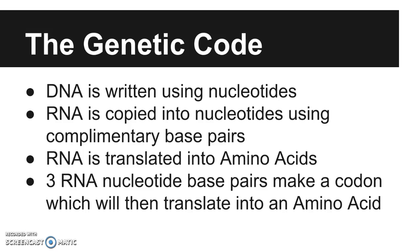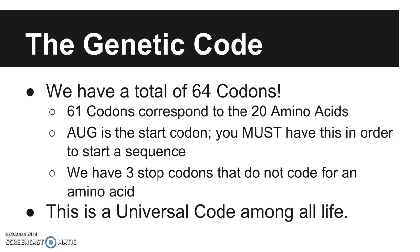The first thing we need to know is the genetic code. DNA is written using nucleotides and those nucleotides have base pairs. RNA is also written using nucleotides and base pairs. The difference between DNA and RNA is that DNA has the base T, while RNA has the base U or uracil. RNA can be translated into amino acids, but DNA must remain in the nucleus. Three RNA nucleotide base pairs make a codon, which then translates into an amino acid. We have a total of 64 codons — 61 codons correspond to the 20 amino acids, so more than one codon will correspond to the same amino acid.